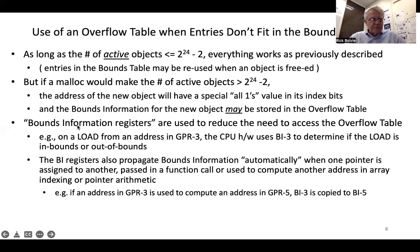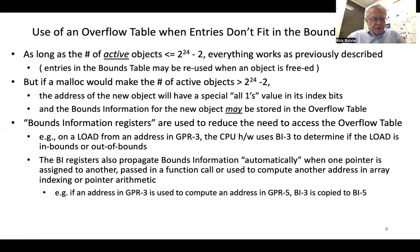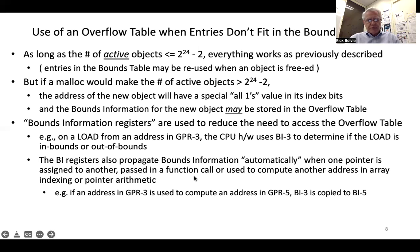We also use bounds information registers to reduce the need to access information from the overflow table. When a load is done from an address in GPR 3, the CPU hardware uses bounds information register 3 to determine if the load is in bounds or out of bounds. These bounds information registers also propagate bounds information automatically when one pointer is assigned to another, passed in a function call, or used to compute another address. For example, if an address in GPR 3 is used to compute an address in GPR 5 in array indexing, BI 3 will be automatically copied to BI 5.